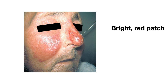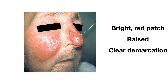Classically, erysipelas presents as a bright red patch that is pretty homogenous throughout. It's also going to have raised borders with a clear demarcation, which is very key for erysipelas — it's almost as if you can draw a line around where the rash is involved, differentiating the uninvolved from the involved skin. As you can see in this photo, it can have a characteristic butterfly distribution present on both cheeks as well as the nose.